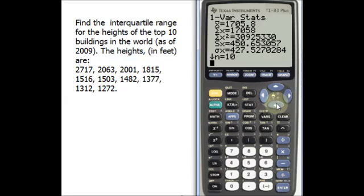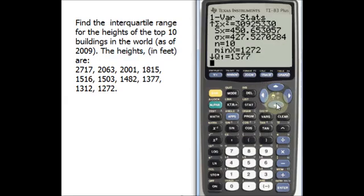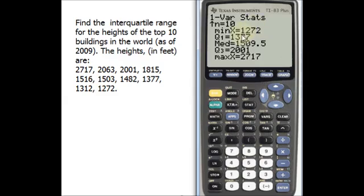Now use the arrow keys to scroll down. What we are looking for is Q1 and Q3. Here is Q1 and here is Q3.